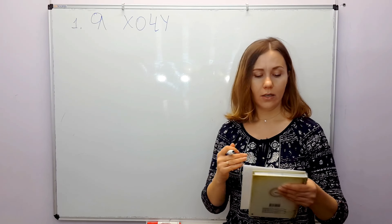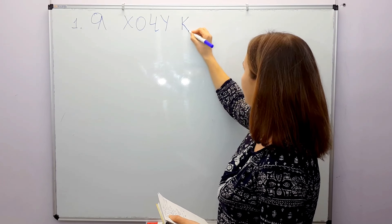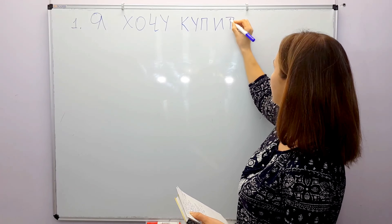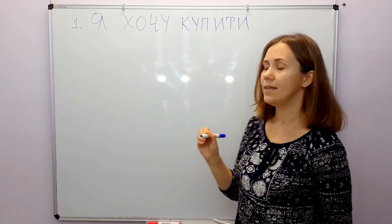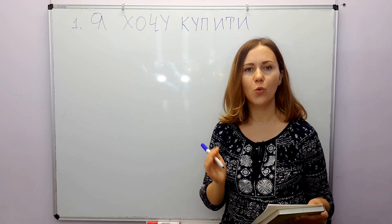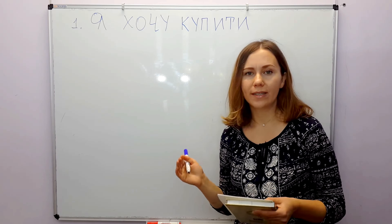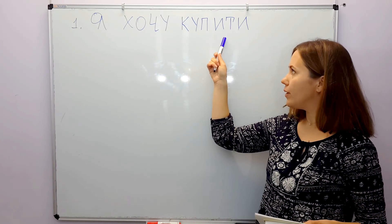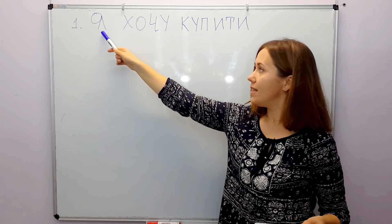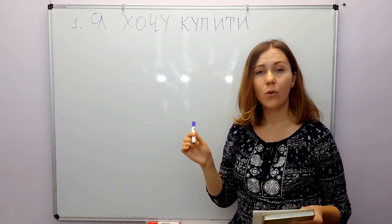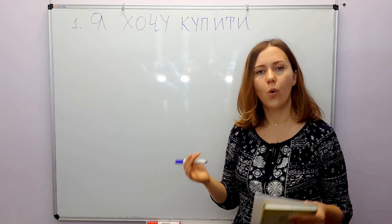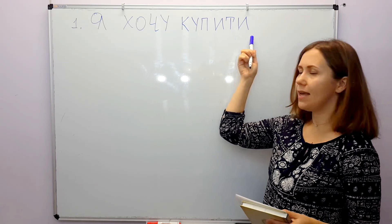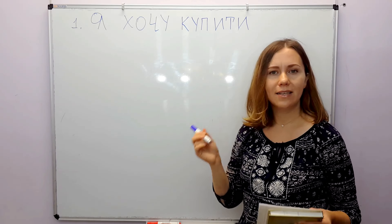Я хочу — I want. Then, to buy — купити. Купити — to buy, it's an infinitive form. Я хочу купити. So be careful: if you have two verbs — хочу and купити, to want and to buy — then the first verb changes according to the person. The next verb, купити, we don't add any endings; we use the infinitive form.